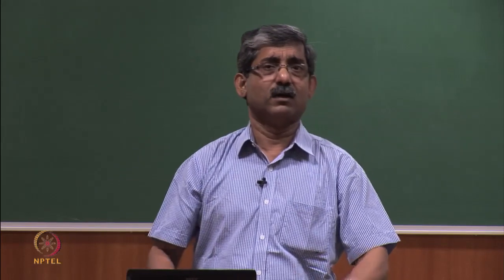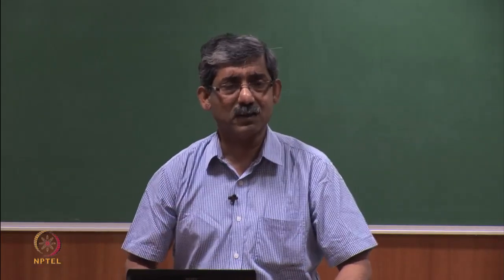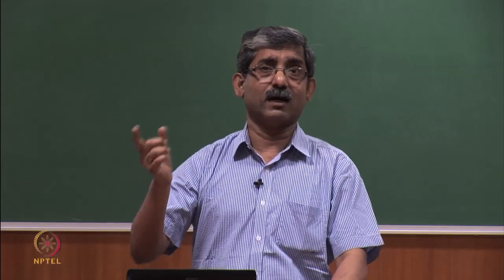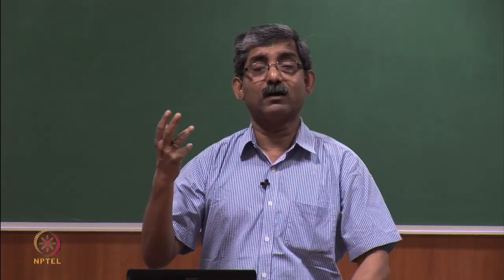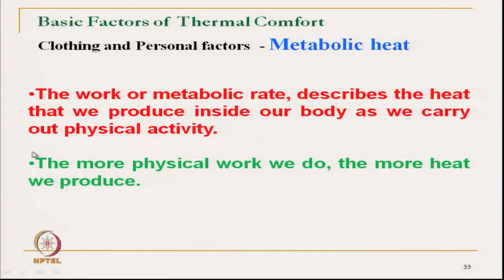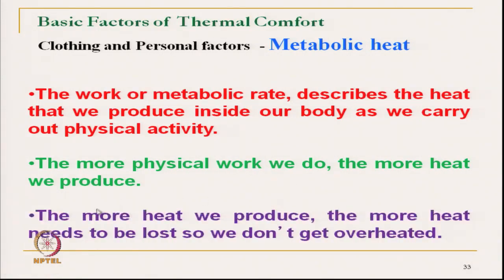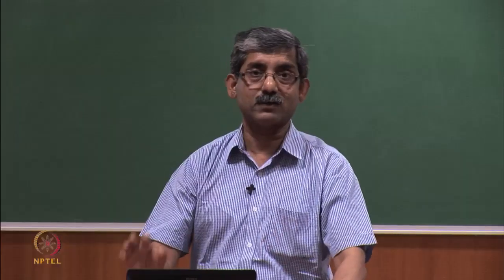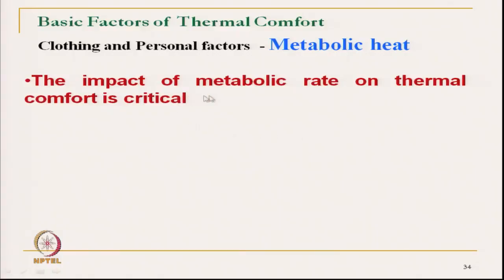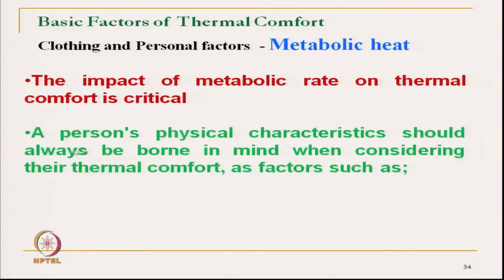At different activity levels and for different persons, if we know the level of metabolic heat we can select our clothing. The more physical work we do, the higher the metabolic heat produced. The more heat we produce, the higher the rate of heat loss we must achieve, otherwise our body will get overheated. The impact of metabolic rate on thermal comfort is critical — a person's physical characteristics such as weight, age, fitness, and height all affect the type of metabolic heat generated.